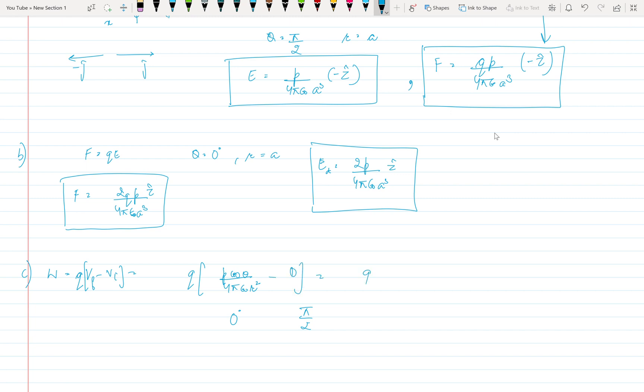So final minus initial, so it becomes directly 0, so we get Q P upon 4 pi epsilon naught a square. So this is the net work done in Joules. So this is the work done, this is the force in this case and this is the force in this case.